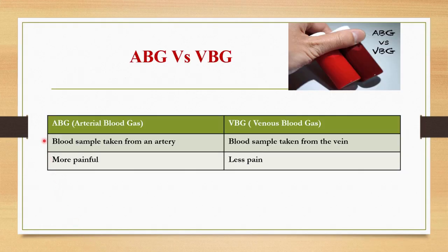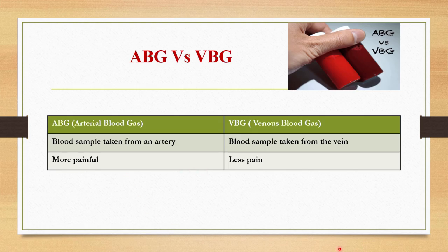As you all know, ABG means arterial blood gas and VBG means venous blood gas. In ABG the blood sample will be taken from an artery and it is a more painful procedure. In VBG the blood sample will be taken from the veins and it is less painful comparatively. In the picture you can see the ABG sample looks bright red because of more oxygen in the arterial blood, while the VBG sample will be a bit darker comparing to ABG.